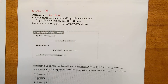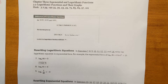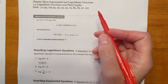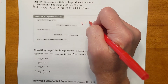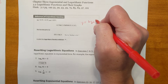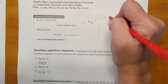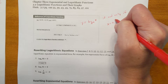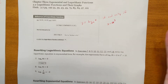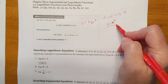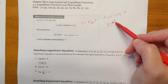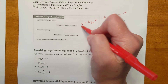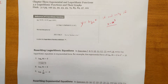The definition of a logarithmic function: for a greater than 0 and a not equal to 1, y is equal to log base a of x, if and only if x equals a to the y. So if you have an exponent written as x equals a to the y, you can rewrite it as y equals log base a of x. It's the inverse of the exponential function.